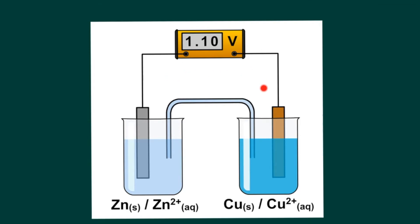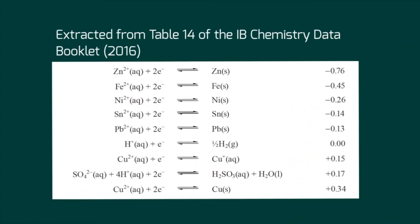Here you can see a typical Daniell cell or voltaic cell: a zinc plate inside a solution of zinc sulfate, and a copper plate in a solution of copper sulfate, connected by a salt bridge. To arrive at this voltage from theoretical calculations we need to use the IB chemistry data booklet. Here we have an extract from the IB chemistry data booklet for first exams in 2016 and beyond. The standard electrode potential for zinc is given here as -0.76 volts. This equation is written in the direction where zinc²⁺ accepts two electrons — this gain of two electrons means zinc is being reduced. Copper here is also being reduced; in fact all of these equations flow in the direction of reduction, so the equations as written in the data booklet show standard reduction potentials.